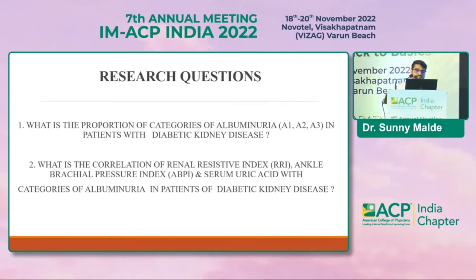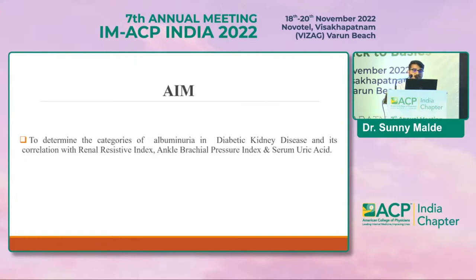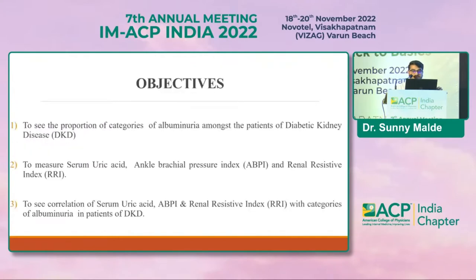Our research question was: what is the proportion of categories of albuminuria (A1, A2, A3) in patients with diabetic kidney disease, and what is the correlation of renal resistivity index, ankle brachial pressure index, and serum uric acid with the categories of albuminuria? The aim of the study was to determine the categories of albuminuria in diabetic kidney disease and to correlate them with renal resistivity index, ankle brachial pressure index, and serum uric acid.